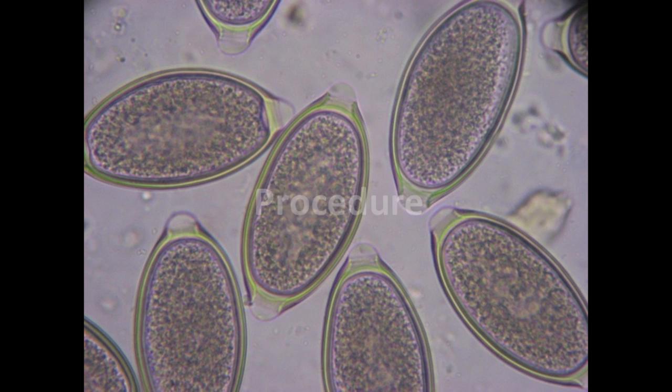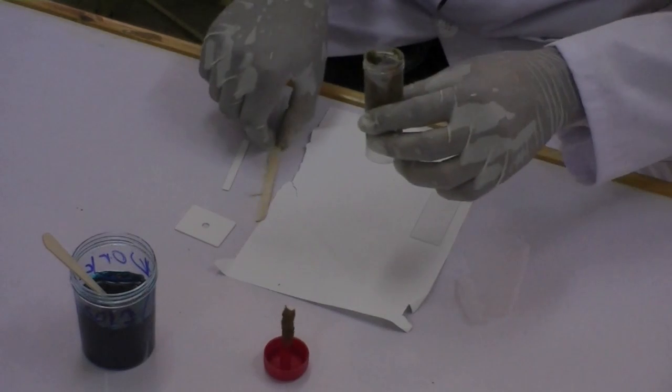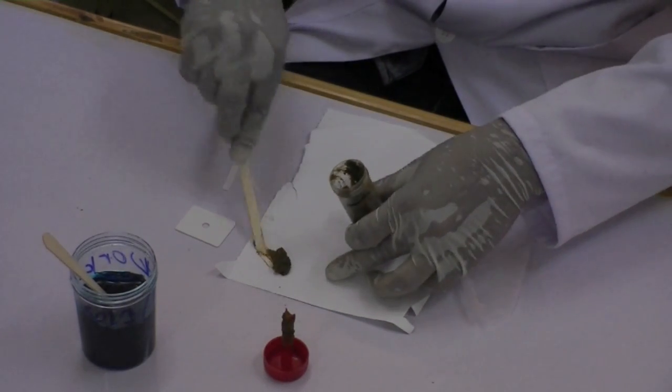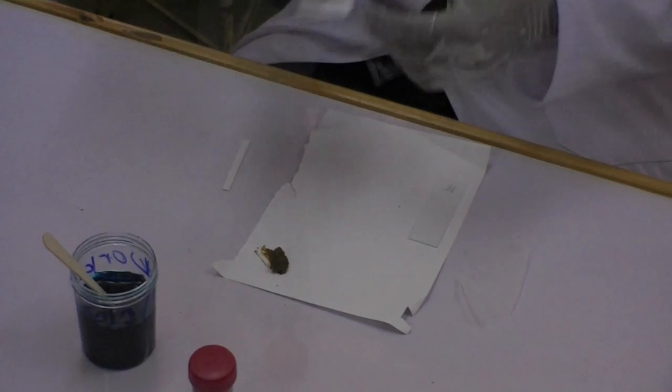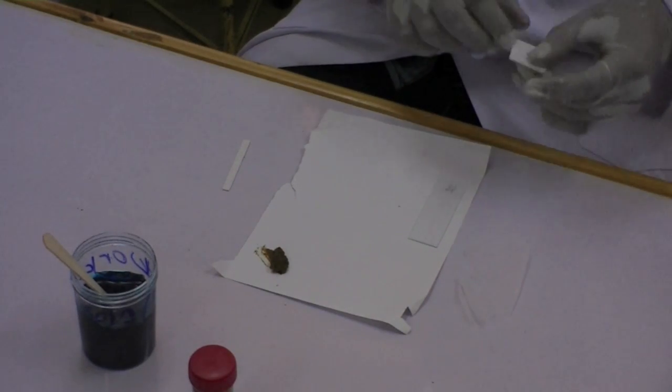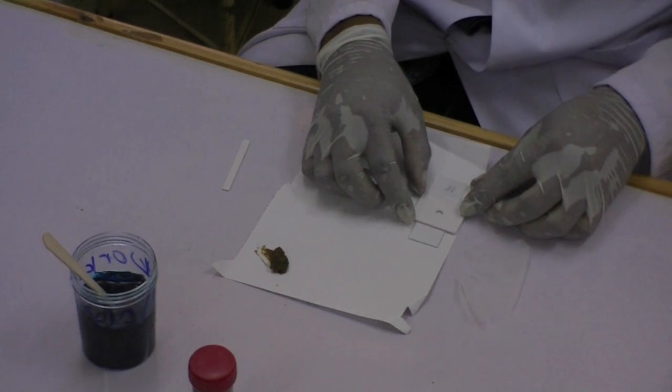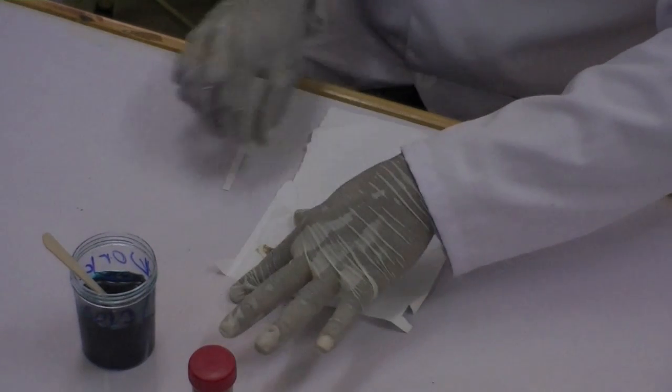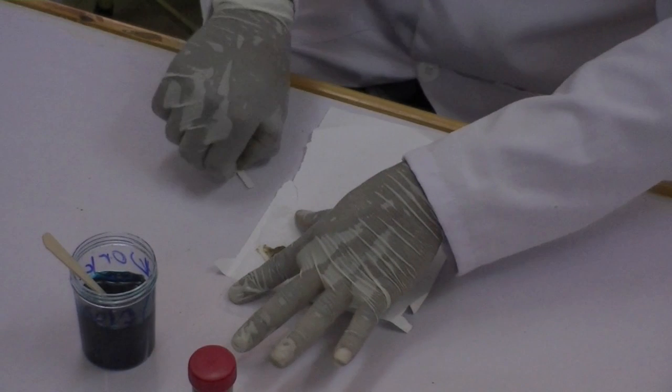Procedure. To start, place a small mound of a stool sample on the scrap paper. Place the template with the hole on the center of a microscope slide. Afterwards, press the small screen on top of the stool so that part of the stool is sieved through the screen and accumulates on top.